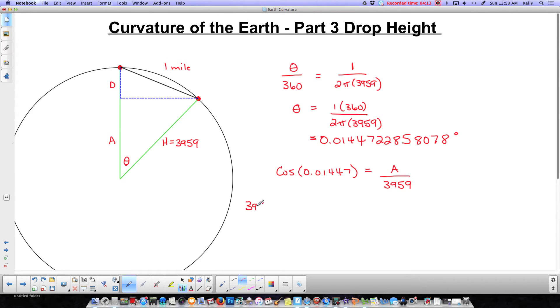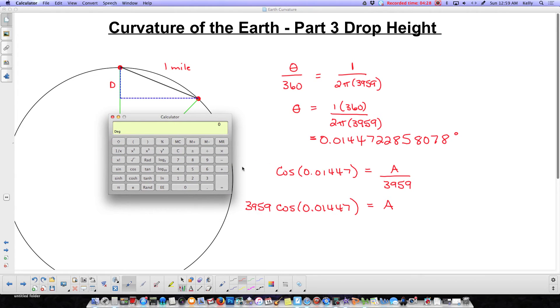So we do 3959 times the cos of 0.01447, and that's going to give me what a is. Now, so we'll go over here, and the first thing I'm going to do is I'm going to get this whole number on my calculator again. So I'd have to do 360 divided by 2 divided by pi divided by 3959, and I get that preposterously long decimal number. And I have to take the cosine of it and then multiply by 3959. So we're going to hit the close button, and then times it by 3959.